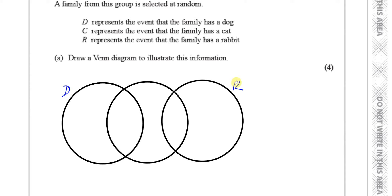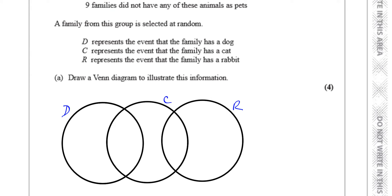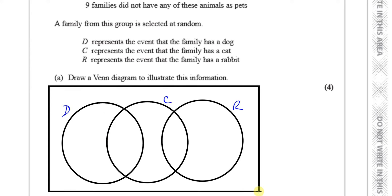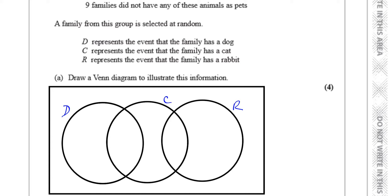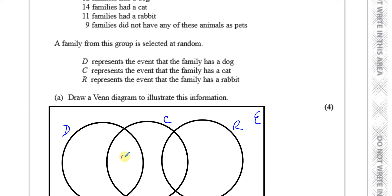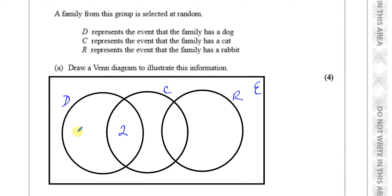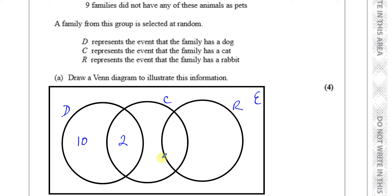I'll put C over here. And there's also those people who didn't own any of them but were in this group — those go into the universal set, which represents all 40 people asked. Some people are not in these three circles but are still within that group of 40, so they'll be inside the universal set. Let's start filling in the values we know. Two families had both a dog and a cat, so that's 2 in the intersection. Twelve families had a dog, so the whole circle has to total 12, leaving 10 in dog only. Then 14 families had a cat — I can't place the remaining values yet because I don't know the cat-rabbit split.